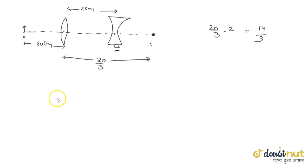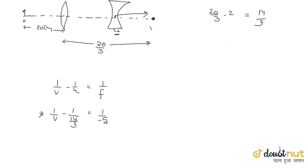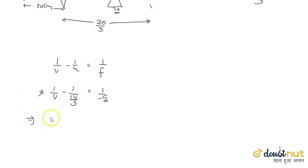So again formula: 1 upon v minus 1 upon u is equal to 1 upon f. Now we will find v, and u is 14 by 3 is equal to 1 upon minus 5. Look, 14 by 3 is positive because all rays are going in this direction and we have to go from this pole in that direction to measure the distance.